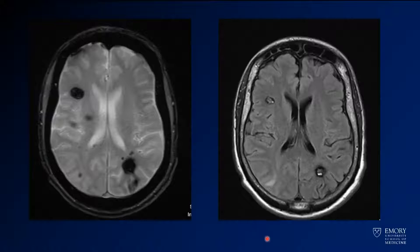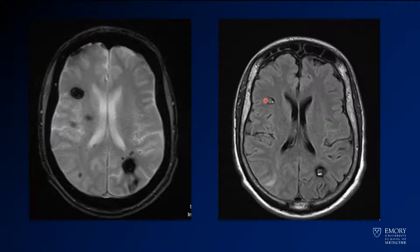Now if you look at the susceptibility — this is a gradient image, and this is T2 or FLAIR — what you have is multiple lesions with rims of dark hemosiderosis. Centrally they're T2 bright. Those are a classic appearance for cavernomas, so you definitely want to think about that.